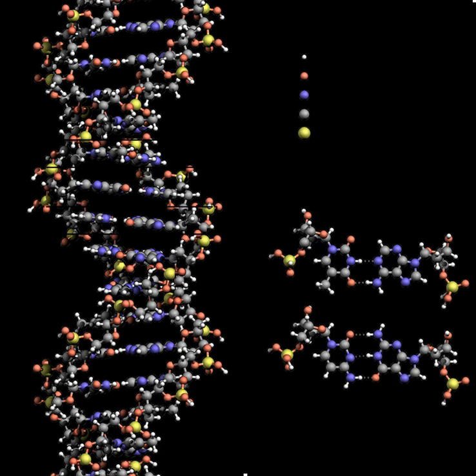The two DNA strands are also known as polynucleotides, as they are composed of simpler monomeric units called nucleotides. Each nucleotide is composed of one of four nitrogen-containing nucleobases — cytosine, guanine, adenine, or thymine — a sugar called deoxyribose, and a phosphate group. The nucleotides are joined in a chain by covalent bonds between the sugar of one nucleotide and the phosphate of the next, resulting in an alternating sugar-phosphate backbone.